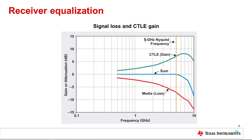For a USB 3.2 Gen 2 signal with a bit rate of 10 gigabits per second, the bit time is 100 picoseconds. The Nyquist frequency for this data rate is 5 gigahertz. The CTLE gain value in the receiver is set to equal the incoming channel loss in order to offset any attenuation of the signal at the Nyquist frequency. This CTLE value is programmable in order to provide a range of values to match the loss, which varies from one system to another.